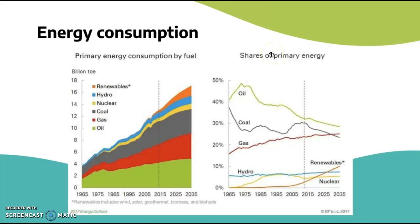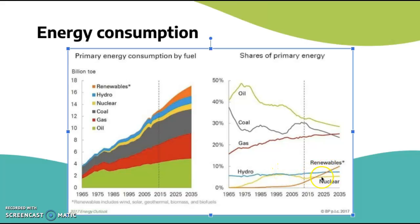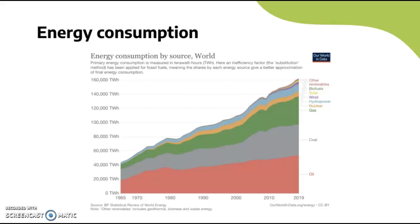Looking at shares of primary energy — the investment shares in types of energy — gas has kind of slowed in terms of investment, which is good. Renewables are showing a projected semi-growth, and hydro and nuclear look almost flat but are slightly up. Renewables definitely show a trend of increasing, which is really important to recognize.